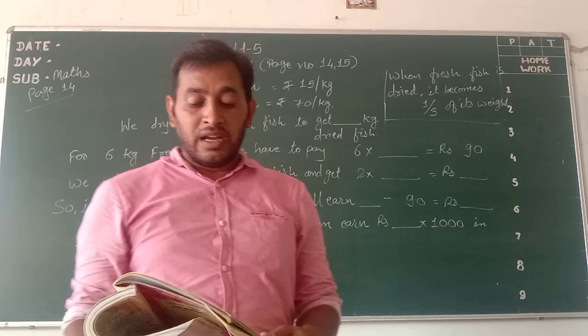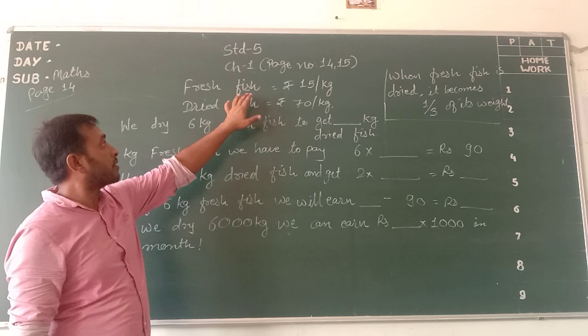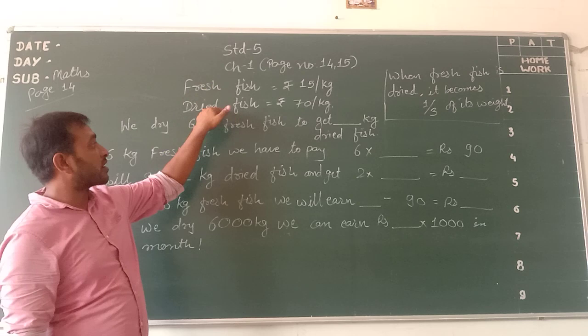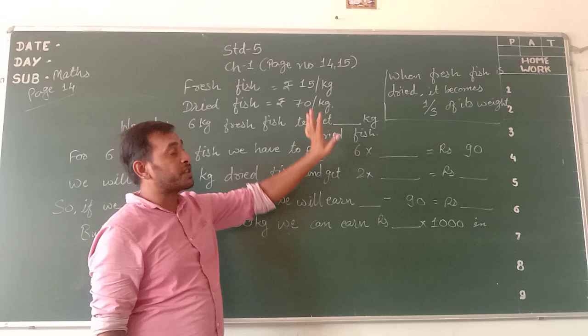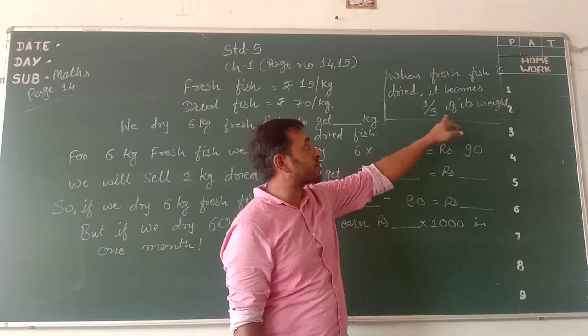Let's first calculate for the 6 kg fresh fish. If we take the price of the fresh fish at 15 rupees per kg, when it is dried it becomes 70 rupees per kg. We have seen that when fresh fish is dried, it becomes one third of its weight.